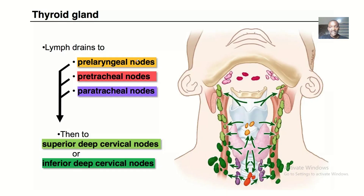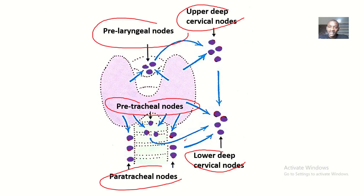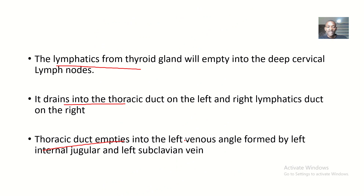Now, using these pictures for clarity: draining the thyroid gland directly are the pre-laryngeal lymph nodes shown in orange, the pretracheal lymph nodes shown in red, and the paratracheal lymph nodes shown in purple on both sides. These three groups of lymph nodes then drain into the superior deep cervical lymph nodes and the inferior deep cervical lymph nodes — that is, the upper and lower deep cervical lymph nodes.